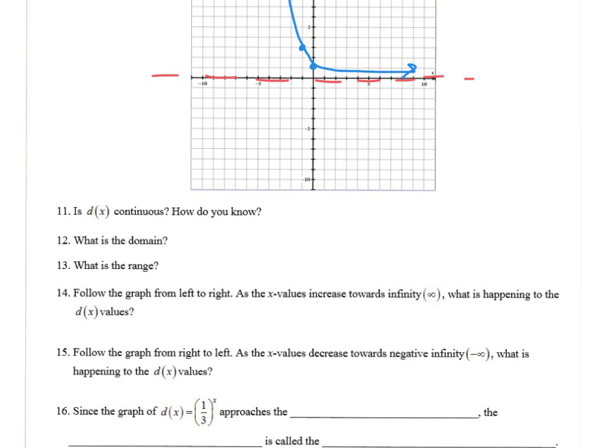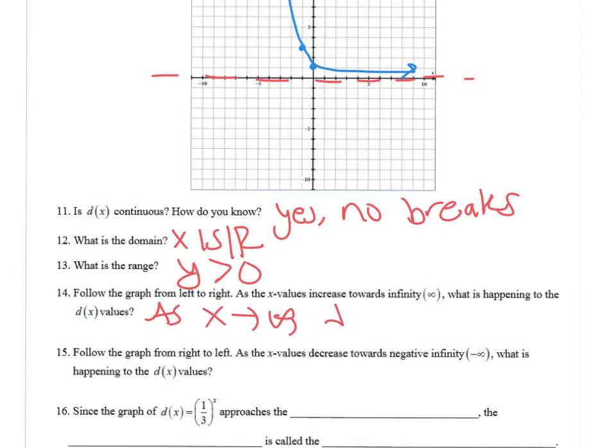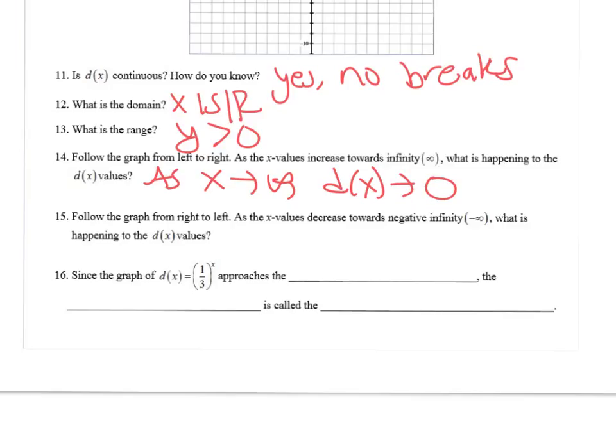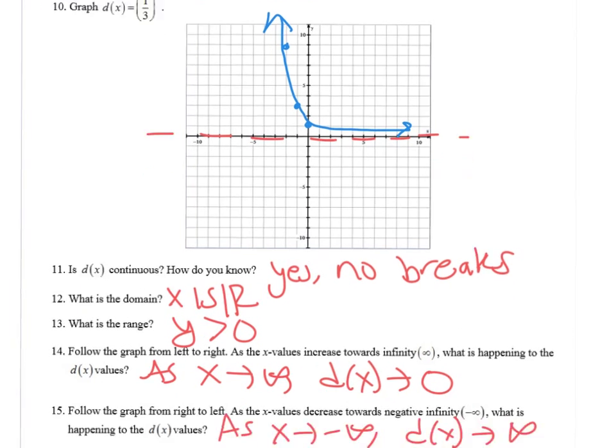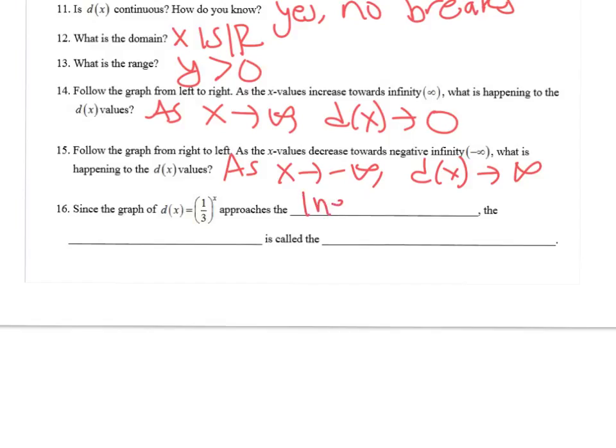Is d of x continuous? Yes. There are no breaks in the graph. You should always write that in a complete sentence. Domain is all reals. Range is y is greater than 0. So as x goes to infinity, d of x goes to 0. So as we go to infinity this way, our graph is approaching 0. And as x goes to negative infinity, d of x approaches infinity. It's going to keep going up. As we go to the left, the graph keeps going up. Since the graph d of x approaches the line y equals 0, the line y equals 0 is called a horizontal asymptote. I hope you're getting the key vocabulary words of the day.